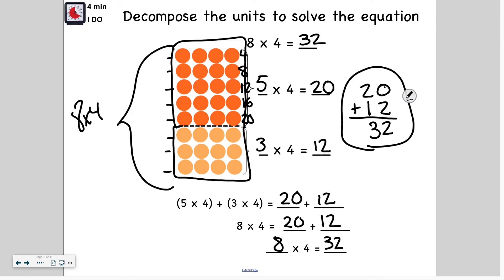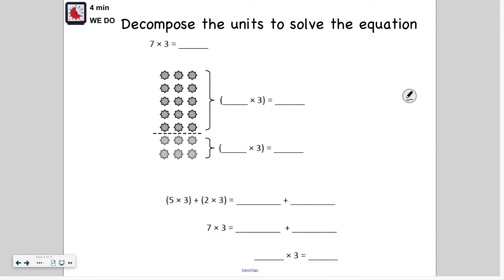So let's try one together. Here we have seven times three. So here I see five groups, and here I see two groups. So we have to solve this. What is five times three? What is two times three? Five times three equals 15. And I already know that two times three is six, because that's an easier fact. So what is the next thing we have to do in order to figure out what seven times three is?